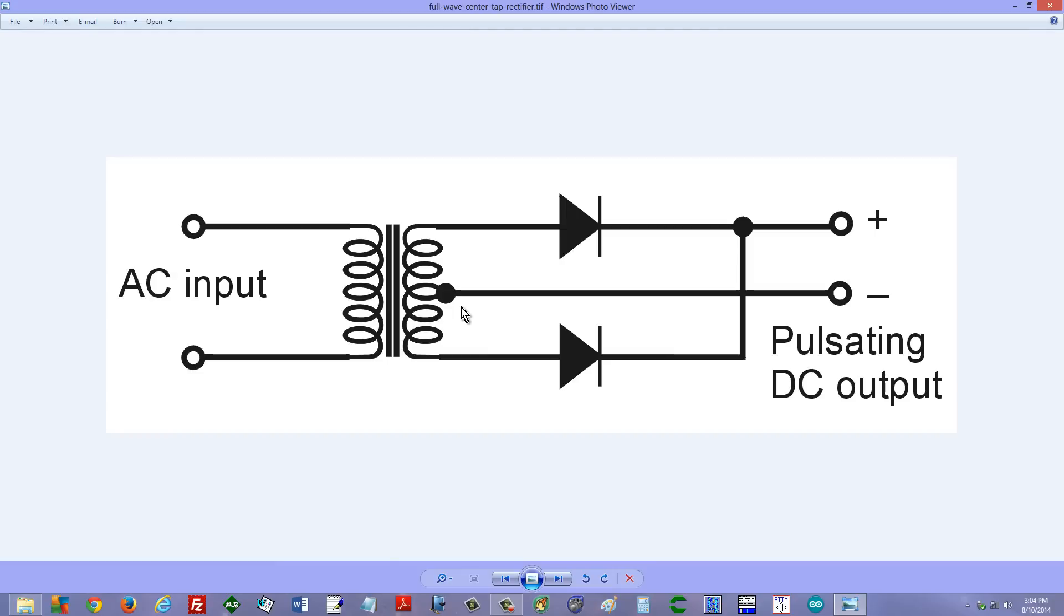So what happens when AC comes into this transformer, it flows back and forth in this coil, inducing a current that flows back and forth in this coil. It reverses polarity once every 1/120th of a second in the United States or once every 1/100th of a second in much of the rest of the world.